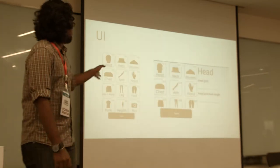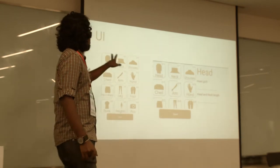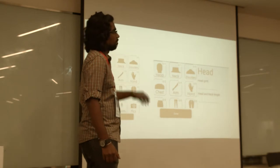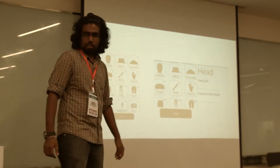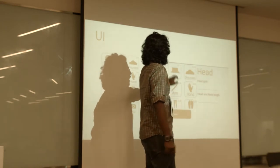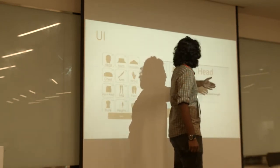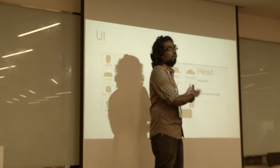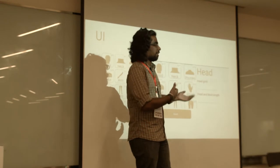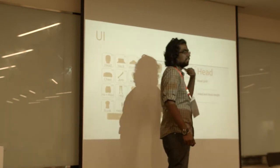Currently this is the UI. We are using an icon-based UI. You have icons for every body part, and when you click on one — for example, the head — it pops up the measurements relevant to it. All the measurements are related to tailors, measurements used by tailors, such as head girth and head and neck length.